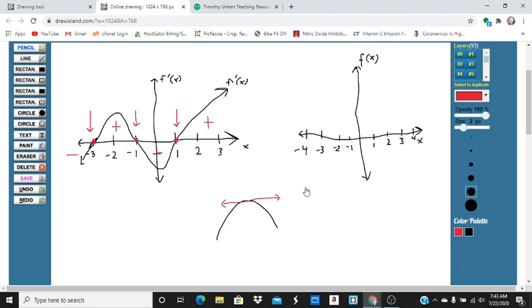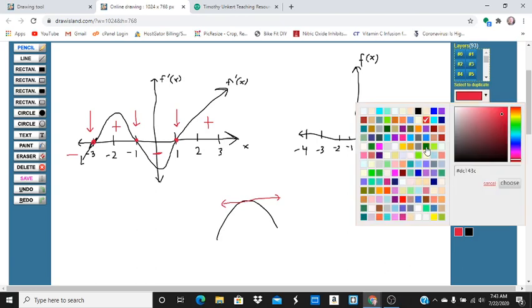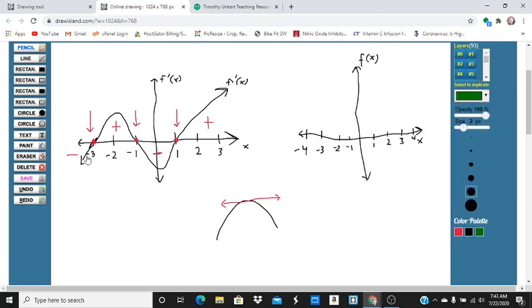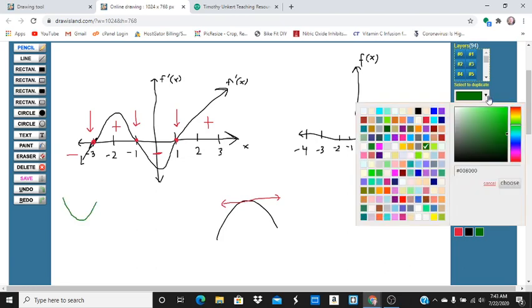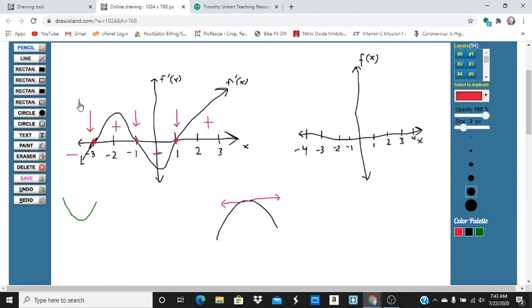If the slope below negative 3 is negative, so it's going down, and the slope above negative 3 is positive, you're going to have a minimum. So this here is going to be a minimum.